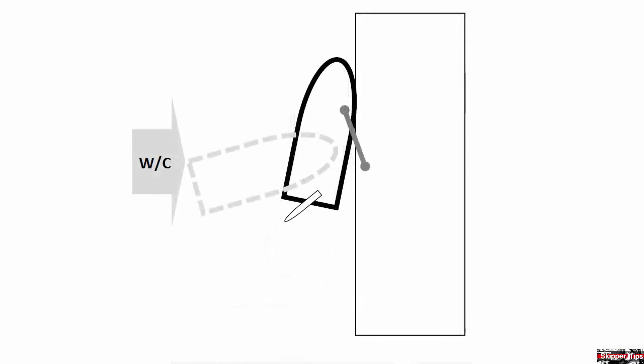In the third illustration, we have the wind or current from astern blowing onto the dock. Here again, we keep our stern at a slight angle to the wind or current direction, and use reverse gear to control the speed of approach.